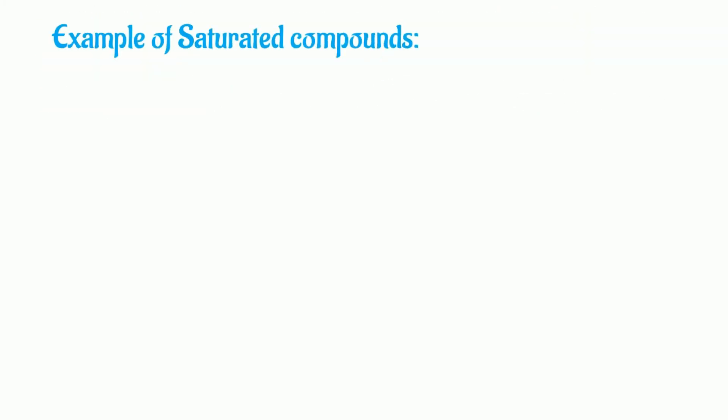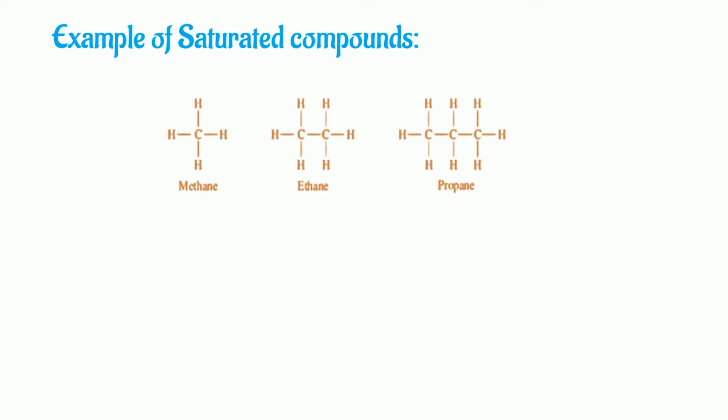Examples of saturated compounds: methane, ethane, and propane. These three are examples of saturated compounds in which carbon atoms are attached with only single bonds.